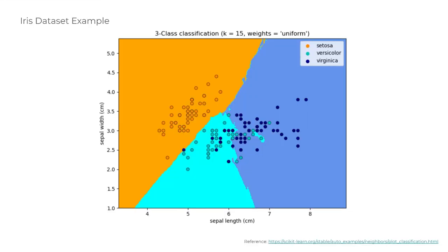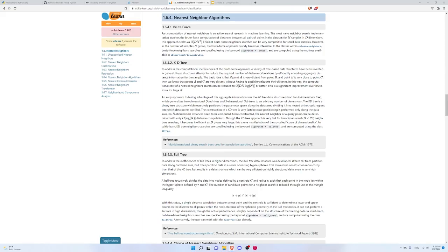Going back to our iris dataset example: if we use brute force you end up with a complicated boundary with weird islands. But if you use KD-trees you're approximating these regions with rectangles, so you're not as accurate along the boundaries, but in the interior regions you'll mostly be correct. You're giving up some accuracy along the class boundaries in exchange for a significant speed increase. You can specify flags in the scikit-learn classes to use KD-tree or another of these different algorithms.